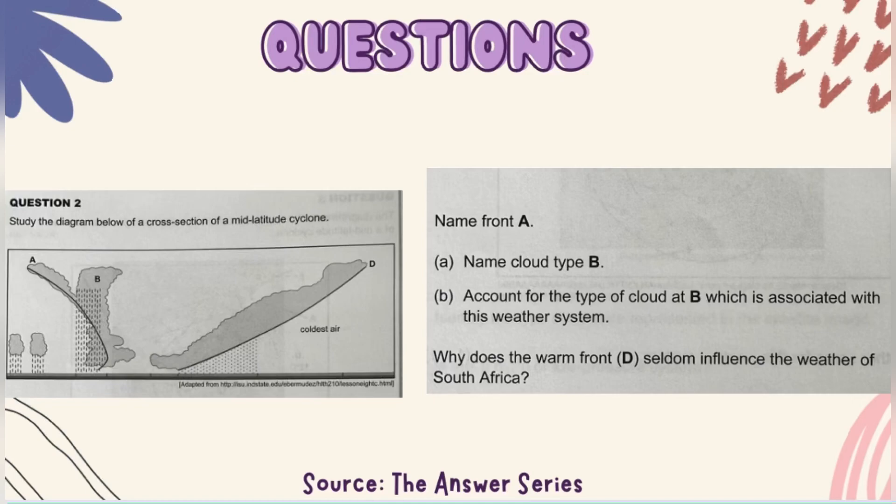Remember earlier when I mentioned the low pressure, that it's a low pressure cell? With a low pressure there is an ascending of warm air, and that rapid uplift of warm air causes condensation and the formation of a cumulonimbus cloud. If you remember from grade 10, it's mainly because of the fact that warm air rises rapidly, so that causes the cumulonimbus cloud.